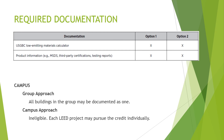The total percentage compliance that needs to be met for healthcare and schools has been modified to account for exterior applied finishes. The required documentation includes the USGBC low emitting materials calculator and the product information. In case of a campus, the buildings in the group can be documented as one — this is known as the group approach. However, each LEED project must pursue the credit individually in the case of a campus approach.